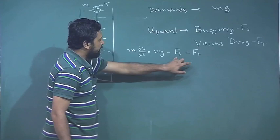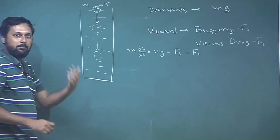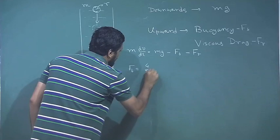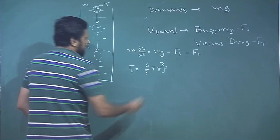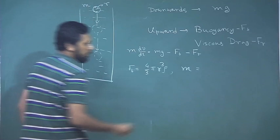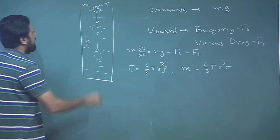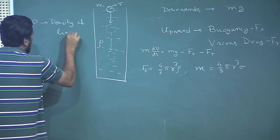The buoyancy force expression is straightforward: f_b will be the volume of the object multiplied by the density of the liquid. So f_b = (4/3)πr³ρ, where ρ is the density of the liquid.